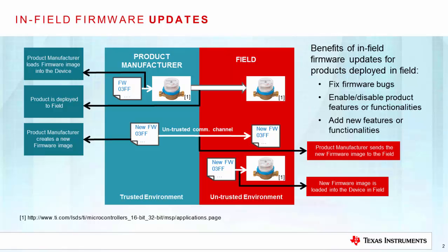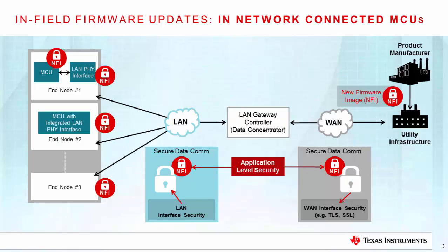A typical field firmware update process involves the following steps. Before deploying to the field, the product manufacturer first loads the firmware image onto the device, and then deploys the product to the field. Once the product is deployed, any updates to the firmware will make use of the field firmware update process, wherein the product manufacturer creates a new firmware image in a trusted environment. The new firmware image is then sent to the product in-field, possibly over an untrusted communication channel. And finally, the new firmware image is loaded onto the device in-field in an untrusted environment.